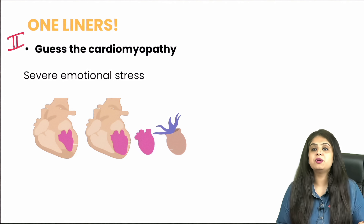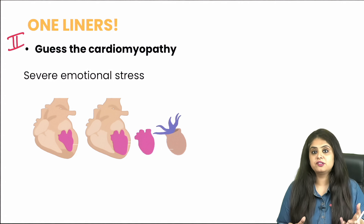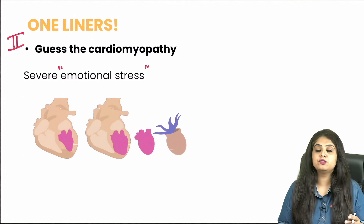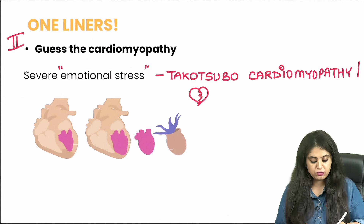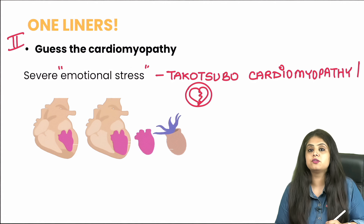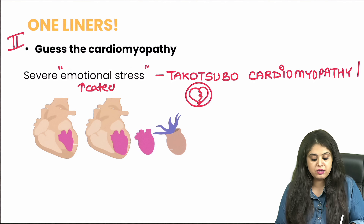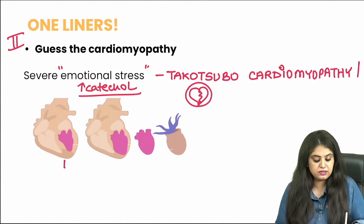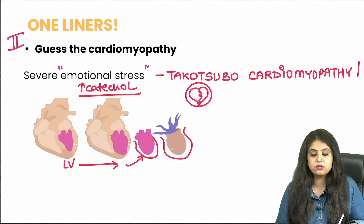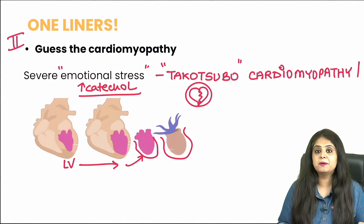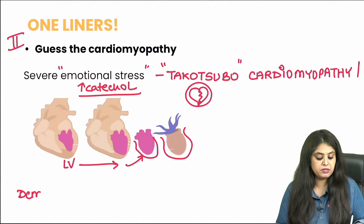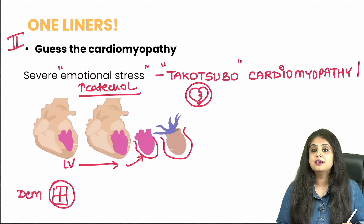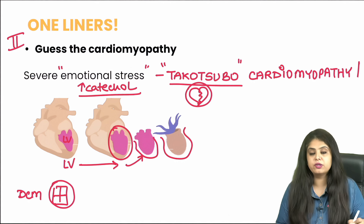Moving to the second question: guess the cardiomyopathy from the image and a history of severe emotional stress — a land dispute or death of a family member. This is Takotsubo cardiomyopathy, also known as broken heart syndrome. Excessive emotional stress causes release of catecholamines, and maximum catecholamine receptors are in the left ventricle. The left ventricle balloons and resembles a Takotsubo, an octopus-catching pot. Unlike dilated cardiomyopathy where all four chambers dilate, in Takotsubo only the left ventricle dilates.